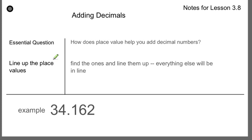There's only really one note, and that is to line up your place values. It's just so important. And the way we're going to do that is we're going to find the ones place in each number, line them up, and then everything else will be in line automatically. So here's our example, 34.162.